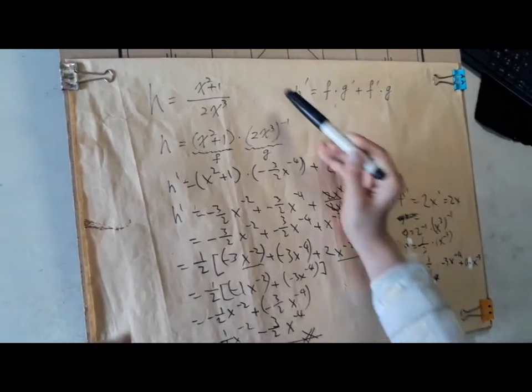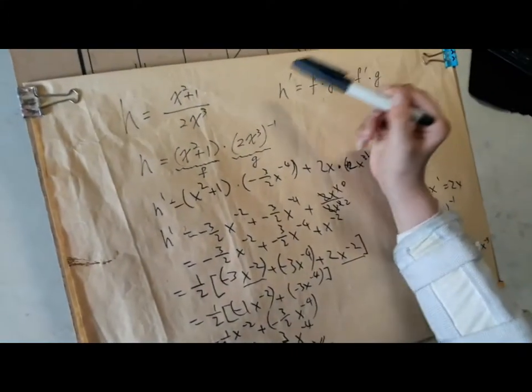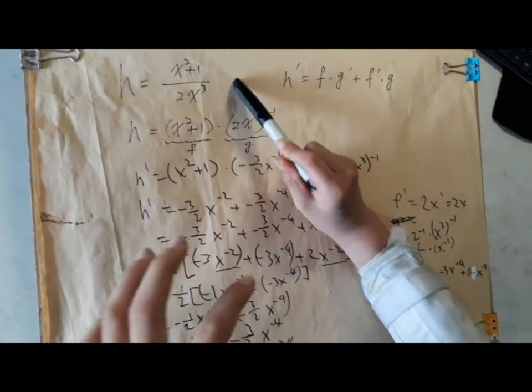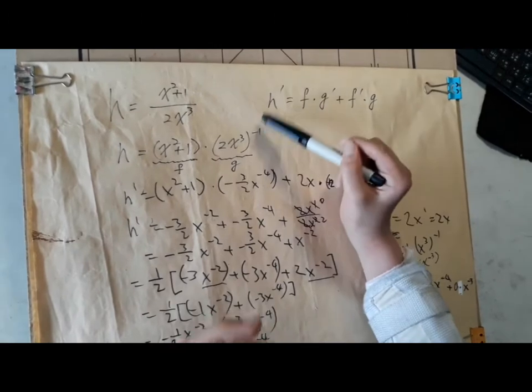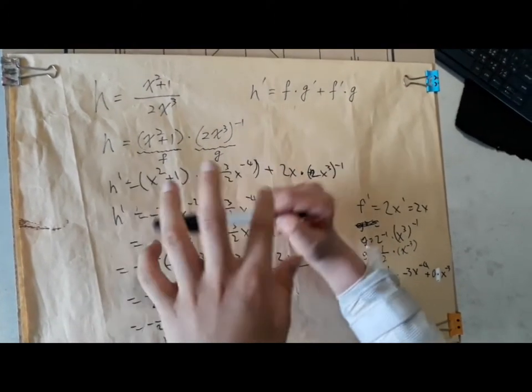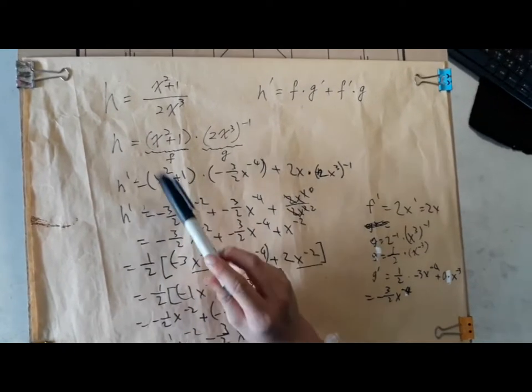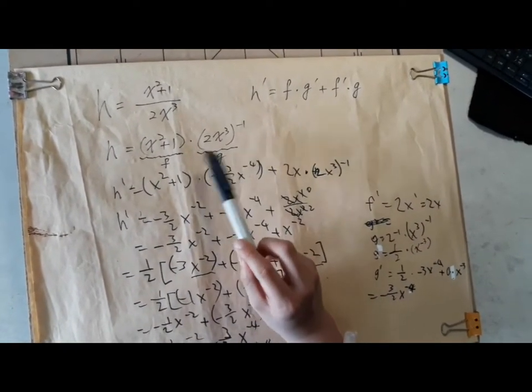In order to change it into two things multiplied together, we take the denominator and break the numerator, and then we use the whole thing to the power of negative one. So now, this is f and this is g.